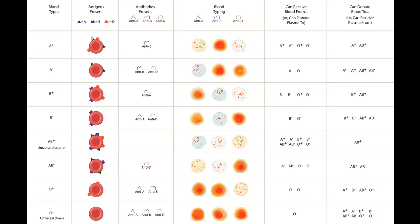A positive has the A antigen and the D antigen. A negative has only the A antigen. B positive has the B antigen and the D antigen. B negative has only the B antigen. AB positive has all three antigens: A, B, and D. AB negative has the A and B antigens. O positive lacks the A and B antigens but has the D antigen. O negative lacks all three antigens on the outside of the red blood cells.